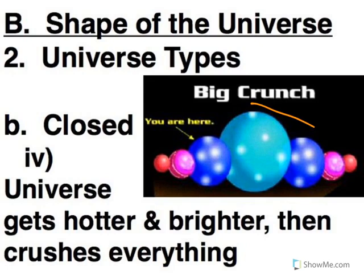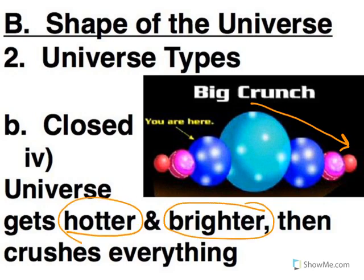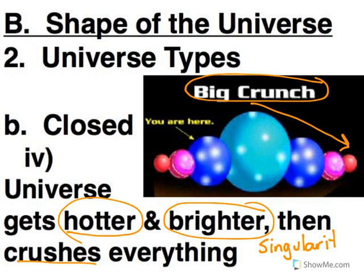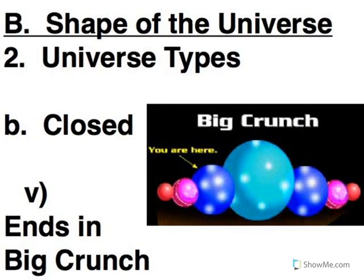Now when it's collapsing, we're compressing everything closer and closer together. So it's going to get hot, and it's going to get bright, and ultimately everything gets crushed. And that has been dubbed the Big Crunch, when everything comes crashing together and you end up with a singularity. Everything has been compressed into a single point. So the Big Crunch is the fate of our closed universe.